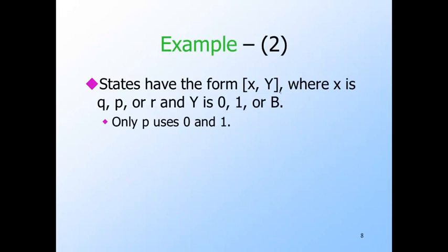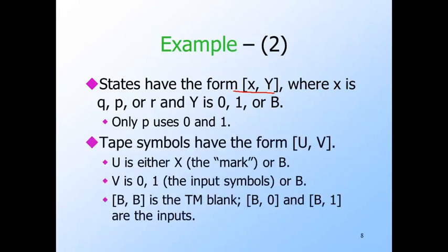A state is a vector of the form (x, Y). Here x is Q, P, or R — one of the control states — and Y is the cache component, with values 0, 1, or B. Only state P uses 0 or 1 in the cache; the other two states just have blank in the cache, giving really only four states. Tape symbols are vectors (U, V): the first component U represents the marking track, either x (the mark) or B (no mark), while V is the data track with values 0, 1, or B. BB is the blank symbol, B0 is input symbol 0, and B1 is input symbol 1.